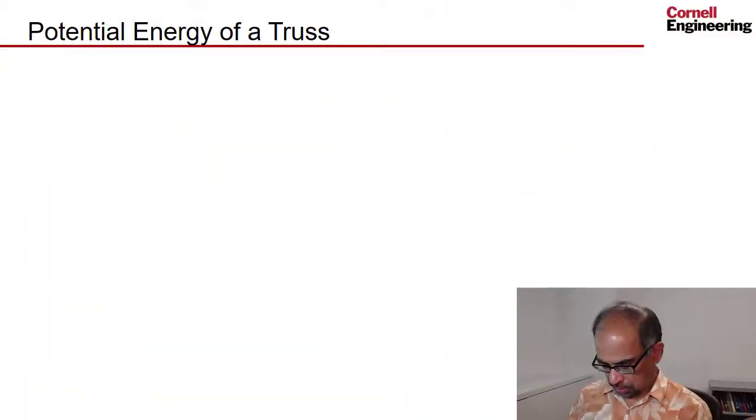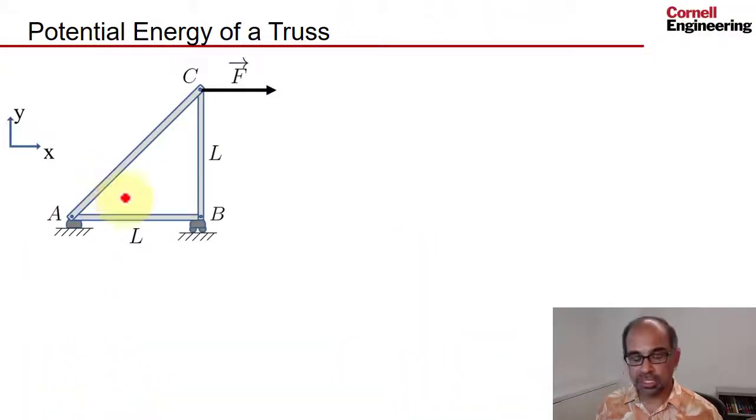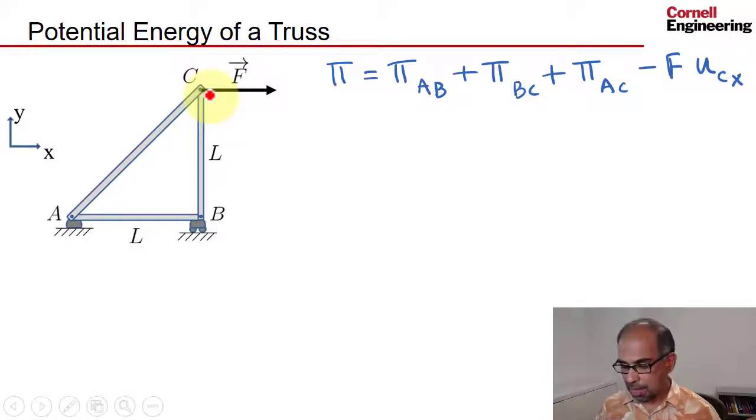Here's the truss we have, and it has three bars. To find the potential energy of the truss, we have to add the potential energy of each of these bars and then subtract out the contribution due to the external force. That's the potential energy of AB and then BC and AC.